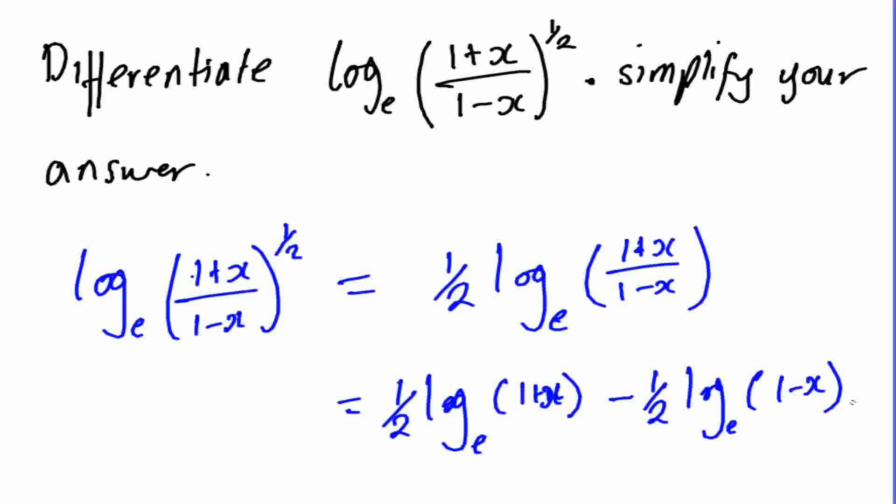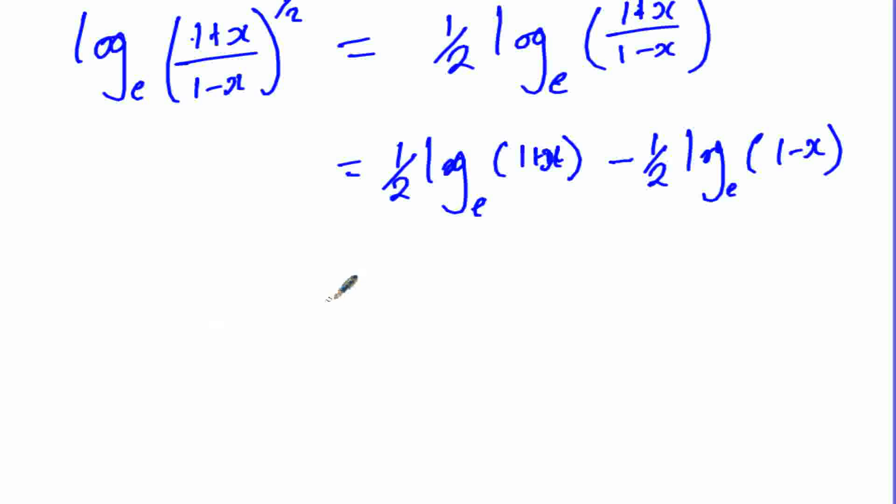So at this level we can differentiate smoothly and we get one-half times the derivative of that is 1/(1+x) then minus one-half times the derivative of this will be negative 1/(1-x). The negative 1 is because of this negative x.